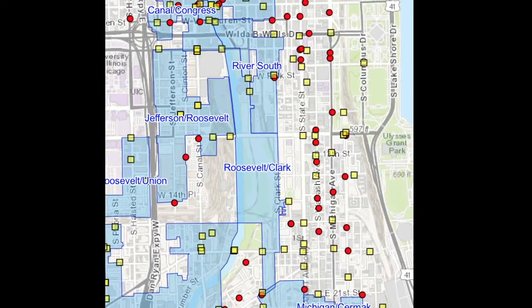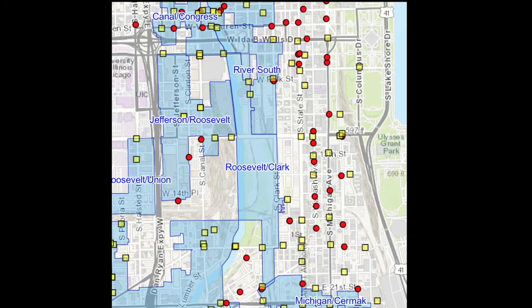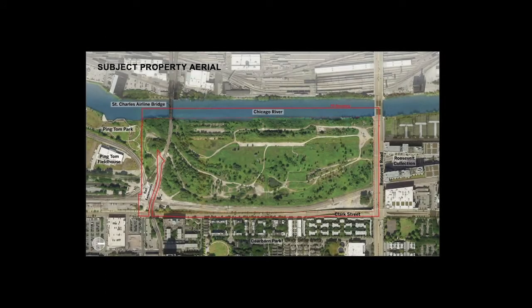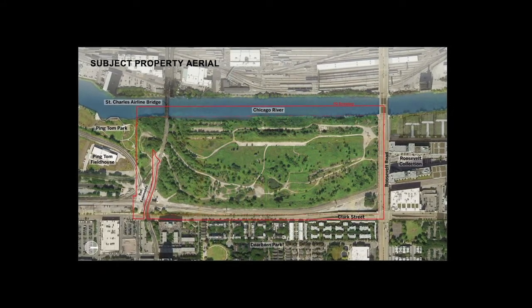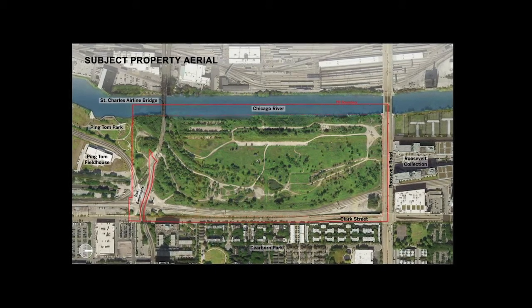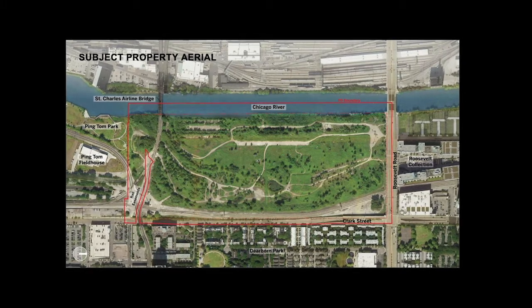In order to use Tax Increment Financing, the current condition of the area must be declared as blighted, making it eligible to use funds for a redevelopment plan. The Roosevelt-Clark Tax Increment Financing Redevelopment Plan and projects were approved by the City of Chicago on April 4, 2019, making it a very recent urban renewal project.